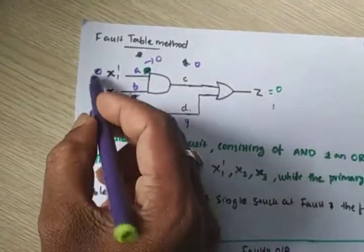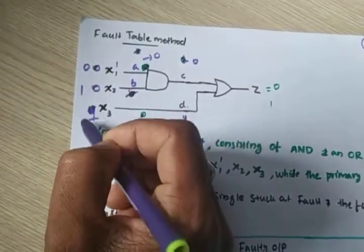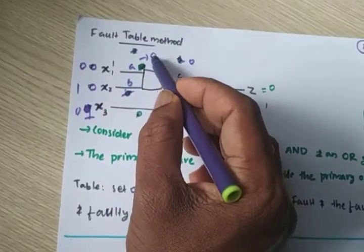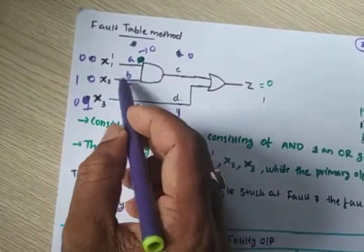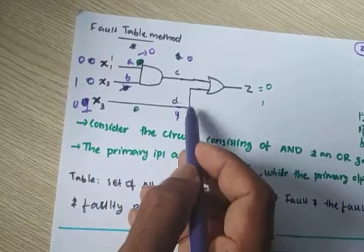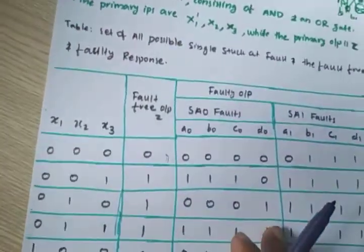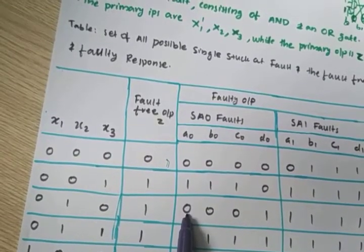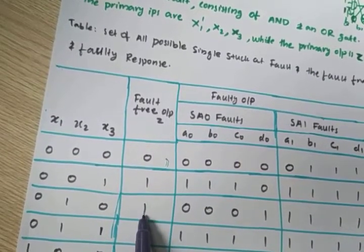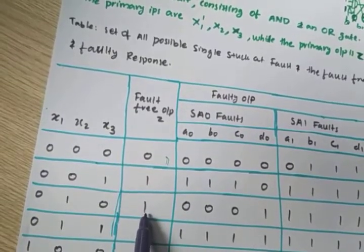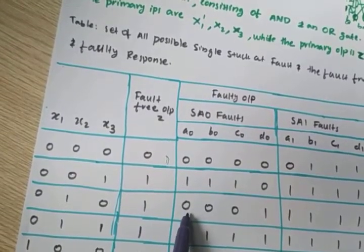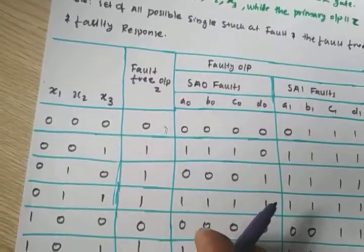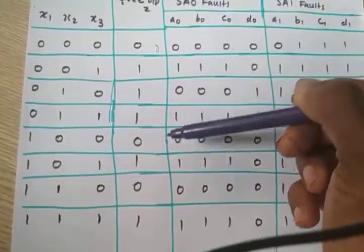For input 0 1 0: x1 bar=1, x2=1, AND gives 1. But with a stuck-at-0, a=0, AND output=0, OR with x3=0 gives 0. Fault-free 010 output is 0. So the a0 output for 010 is also 0. Like this way you can write the entire output.